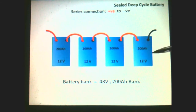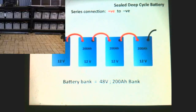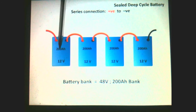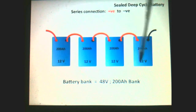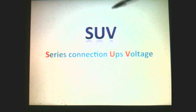Here is an example of sealed deep cycle batteries. You've got four batteries at 12 volts each — each battery is 12 volts and 200 amp hours. Connected in series, that makes 48 volts, and the amp hours do not change. SUV: series connection ups the voltage.